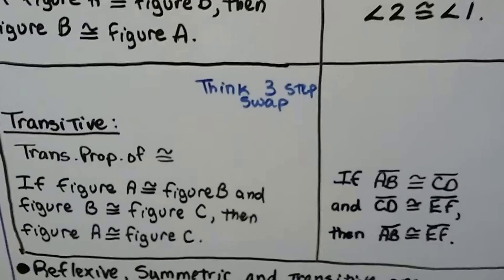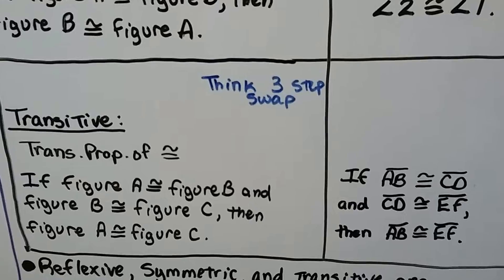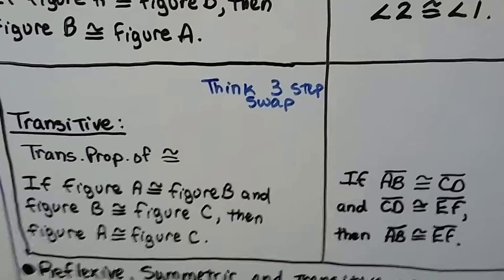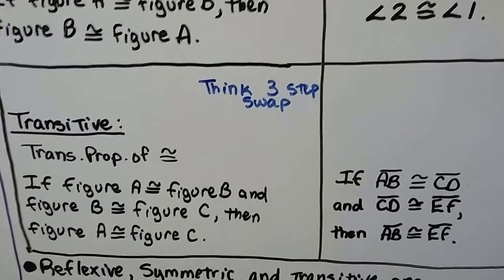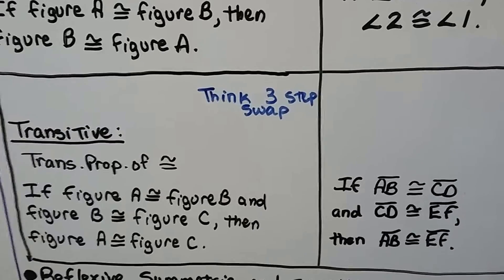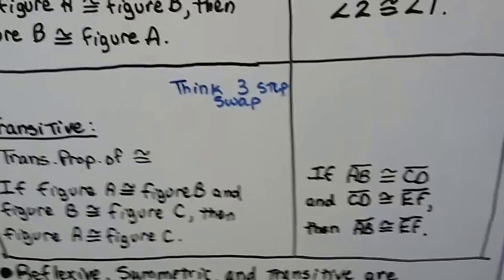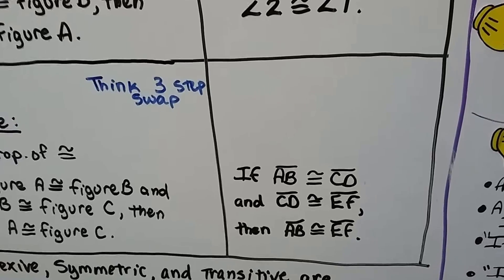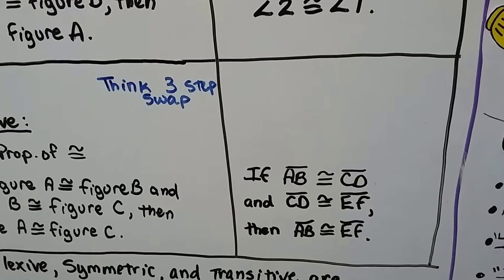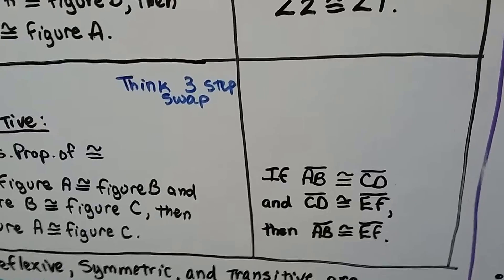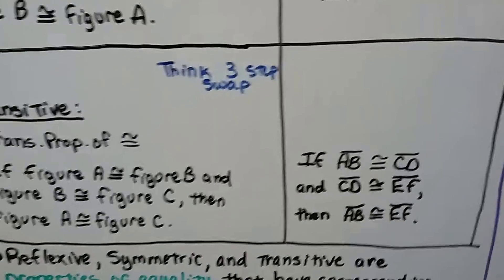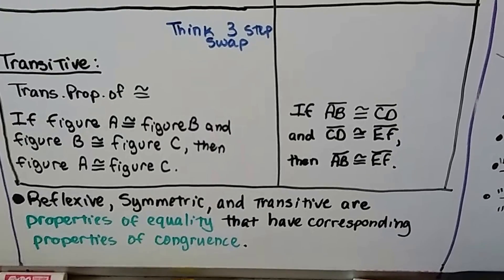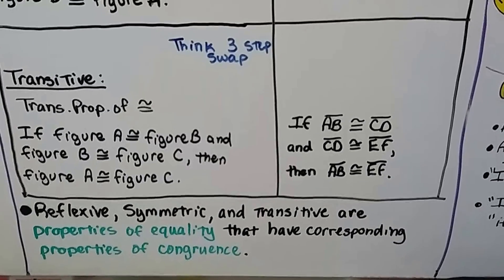The transitive property of congruence — think three-step swap — states: if figure A is congruent to figure B, and figure B is congruent to figure C, then figure A is congruent to figure C. For segments: if segment AB is congruent to segment CD, and segment CD is congruent to segment EF, then segment AB is congruent to segment EF. Reflexive, symmetric, and transitive are properties of equality that have corresponding properties of congruence.